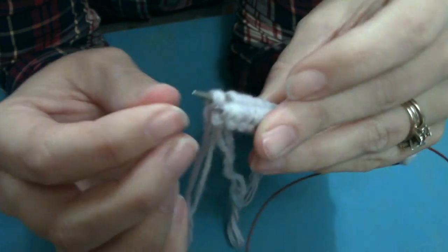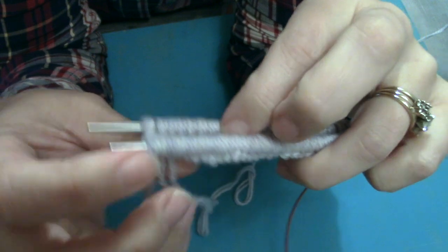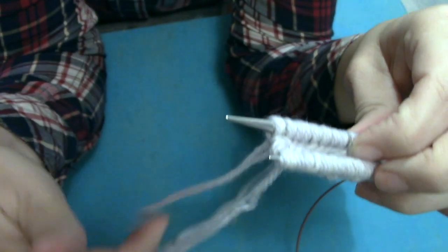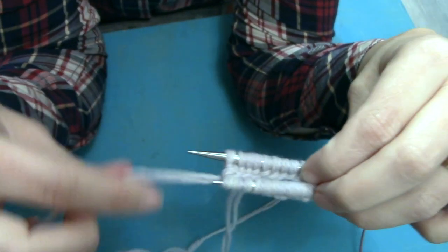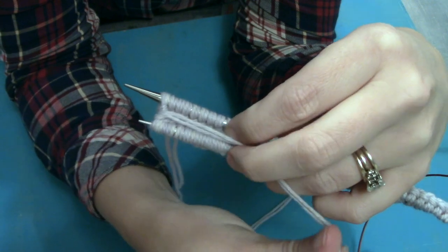And now what that's done is we are joined together in the center there and we are ready to knit in the round using magic loop.